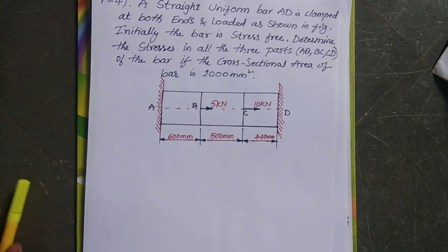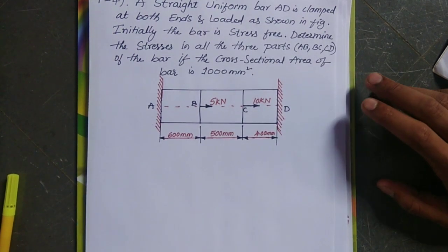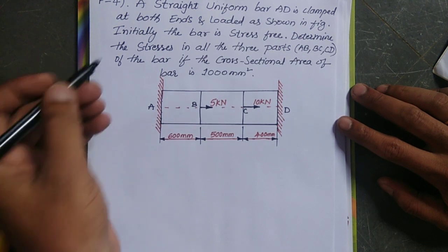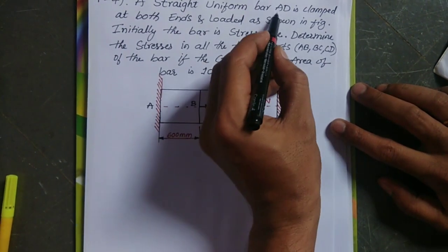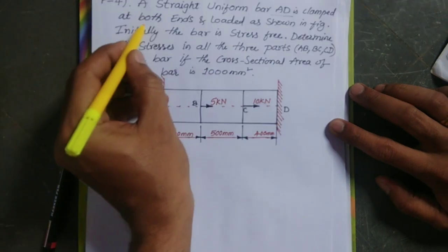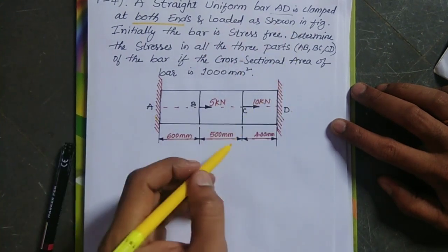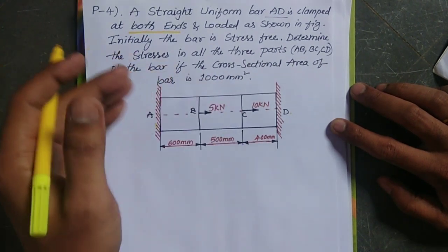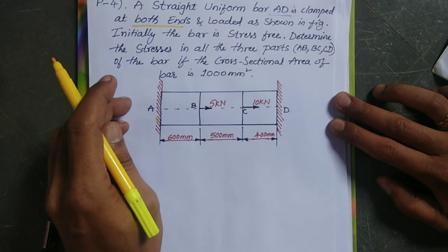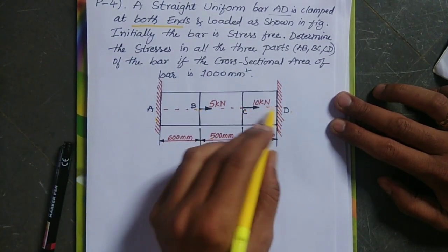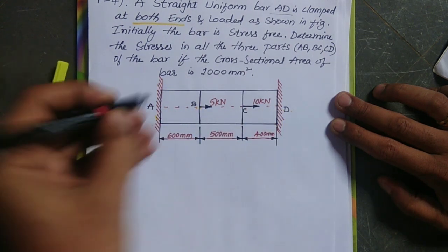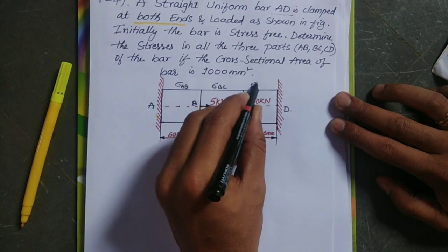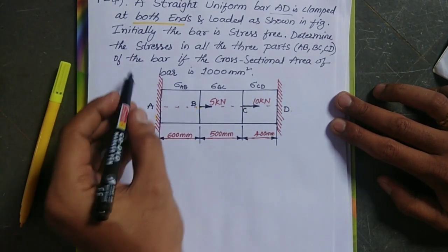In this session I'm going to solve a problem based on simple stress and simple strain. A straight uniform bar AD is clamped at both ends A and D as shown in the figure. Initially the bar is stress-free — meaning before applying the loads the bar is free. We have to determine the stresses in all three parts: AB, BC, and CD — that is sigma AB, sigma BC, and sigma CD.